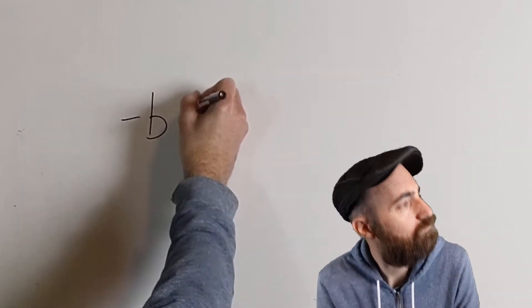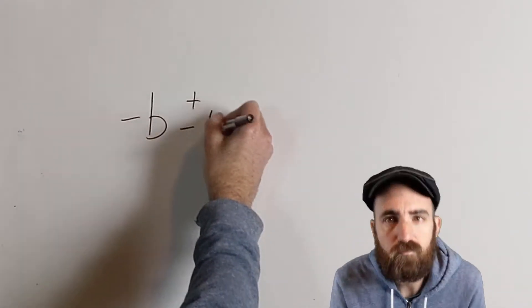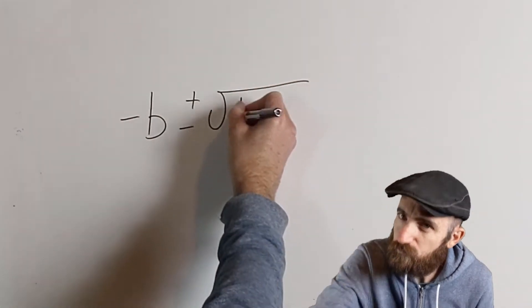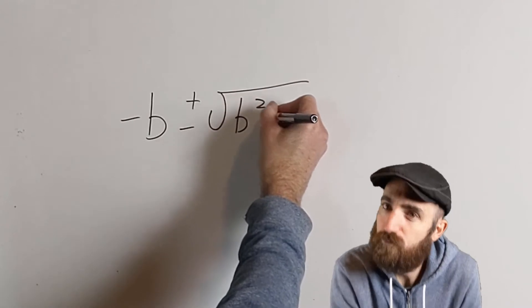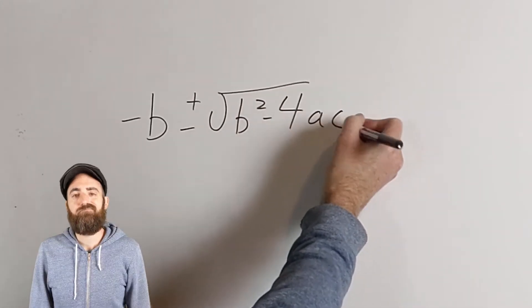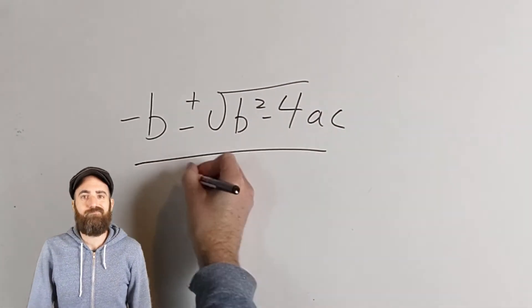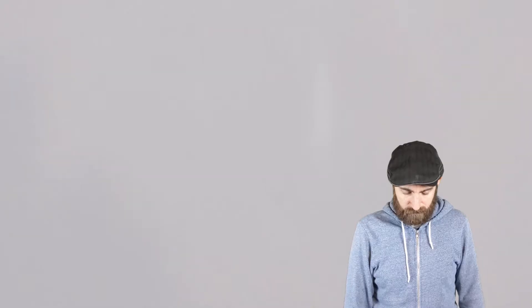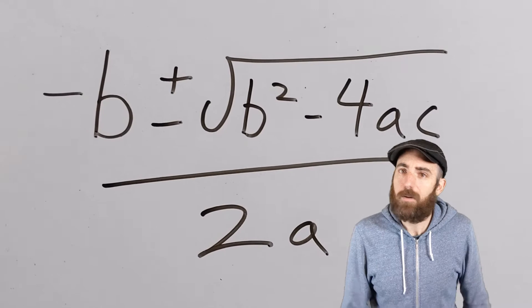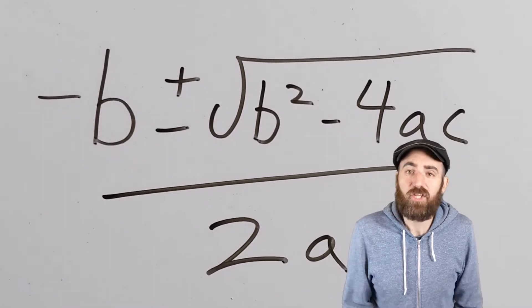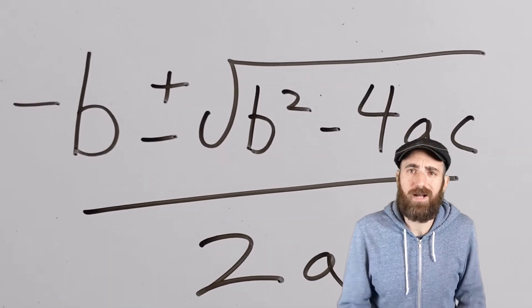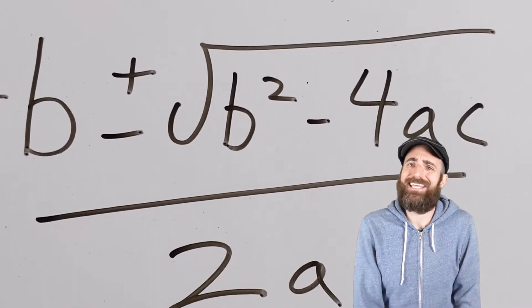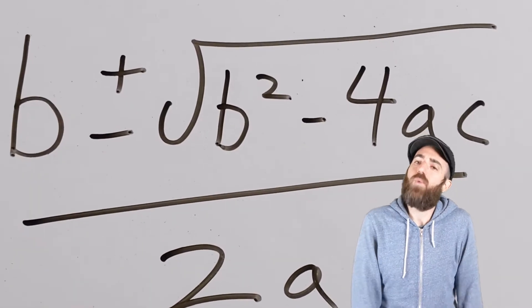The quadratic formula provides the solution to a quadratic equation. You know, ax squared plus bx plus c is equal to zero? Use the quadratic formula to solve for x: negative b plus or minus the square root of b squared minus 4ac, all over 2a.